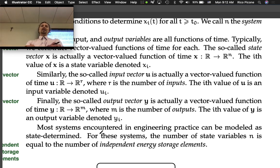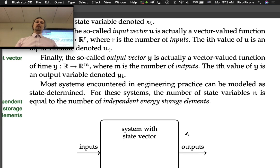Finally, the output vector y is actually a vector-valued function of time y: R → R^m, where m is the number of outputs. The i-th value of y is the output variable denoted y_i. We put all the outputs into a vector-valued function as well.